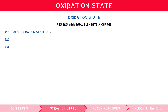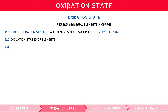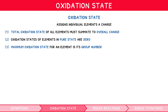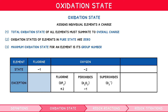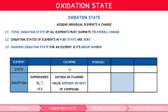The total oxidation states of all the elements within the compound must summate to the overall charge of the compound. Oxidation states of elements within their pure element compound are always zero. And the maximum oxidation state for any element is its group number. There are also several common elements for which their oxidation states must be memorised: fluorine always has an oxidation state of −1; oxygen mostly has an oxidation state of −2, except when with fluorine it becomes +2, in peroxides it becomes −1, and in superoxides it becomes −0.5. Hydrogen has an oxidation state of +1, except in metal hydrides where it is −1.